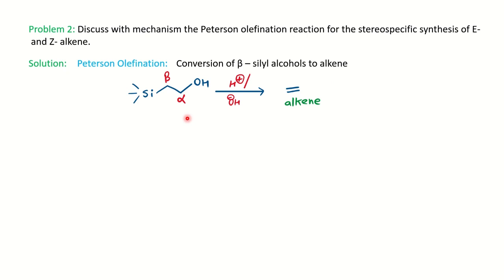Basically, Peterson olefination is the conversion of beta-silyl alcohol to alkene. If you have a beta-silyl alcohol as a reactant, the product is an alkene. What is the structure of beta-silyl alcohol? You have two carbons — alpha and beta. On the beta carbon you have a silyl group having three alkyl groups (trimethylsilyl group), and on the alpha you have an OH group. The reaction can take place either in acid or in base — the product will be the same alkene, but there will be a change in stereochemistry based on the medium, since the reaction is stereospecific.